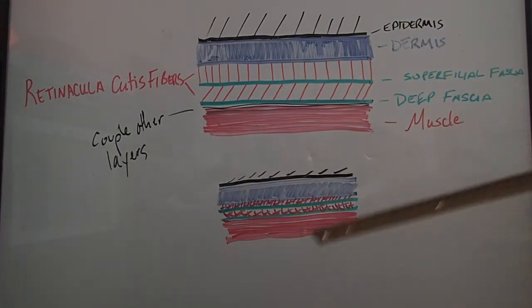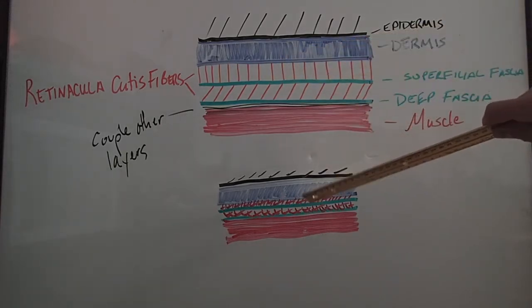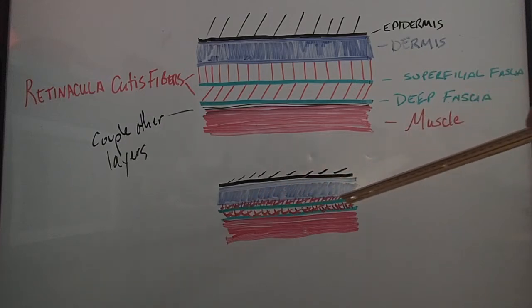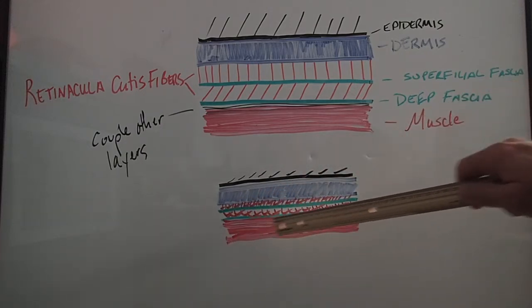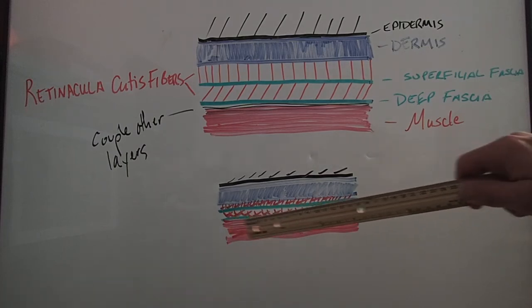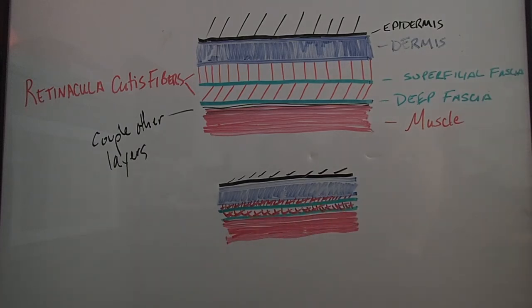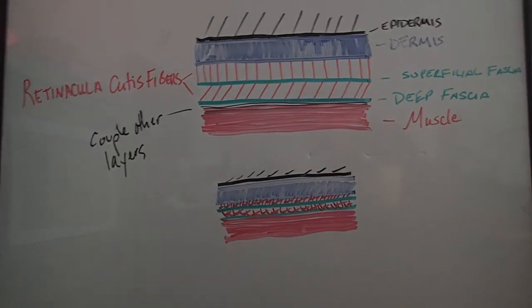When we sit down all day, we start to matte and crush these layers together, so you end up having your fascia actually start sticking to your muscle and your other fascia layers sticking to the fascia layer above it. In between, those retinacula fibers can build up and they can become sticky, creating what's called adhesions.